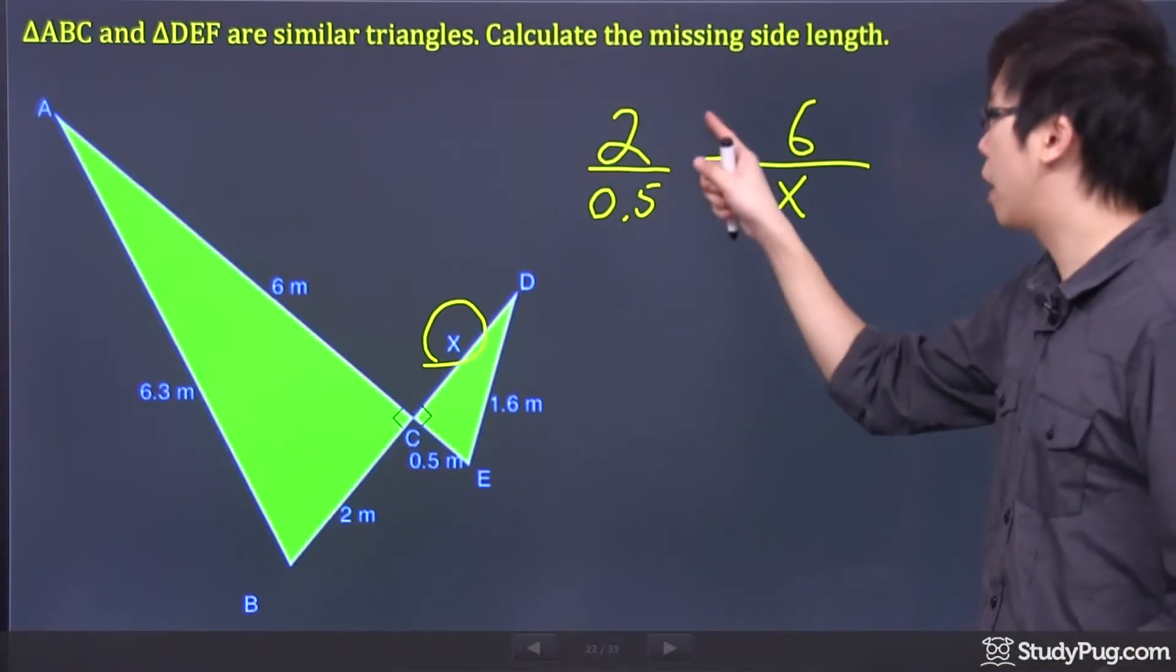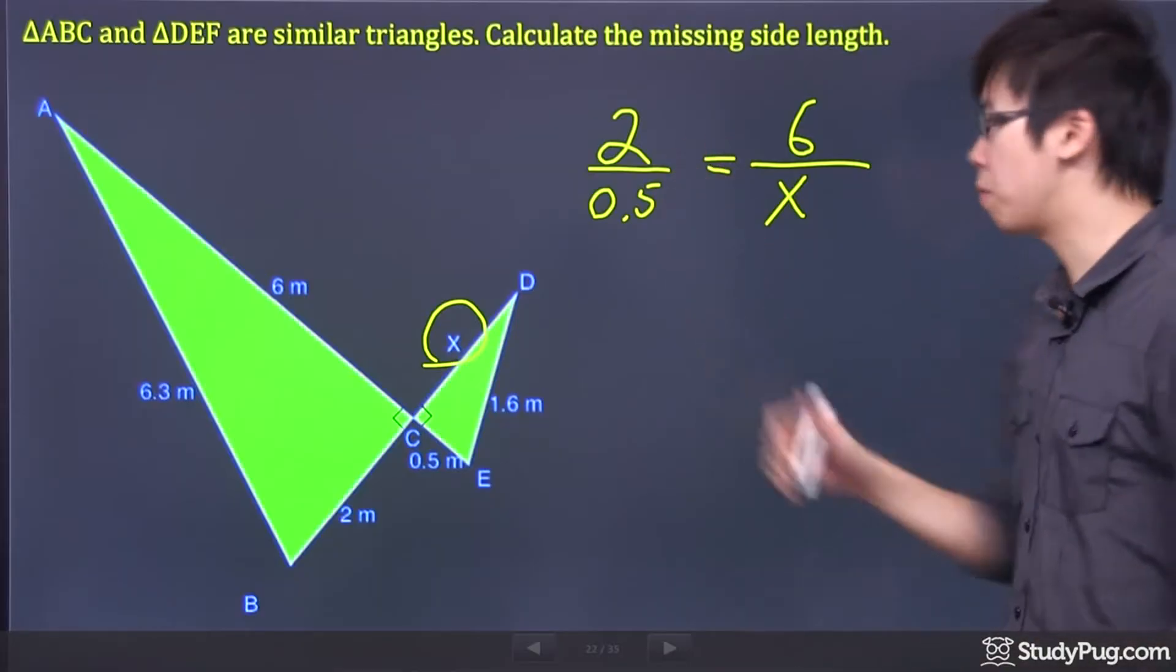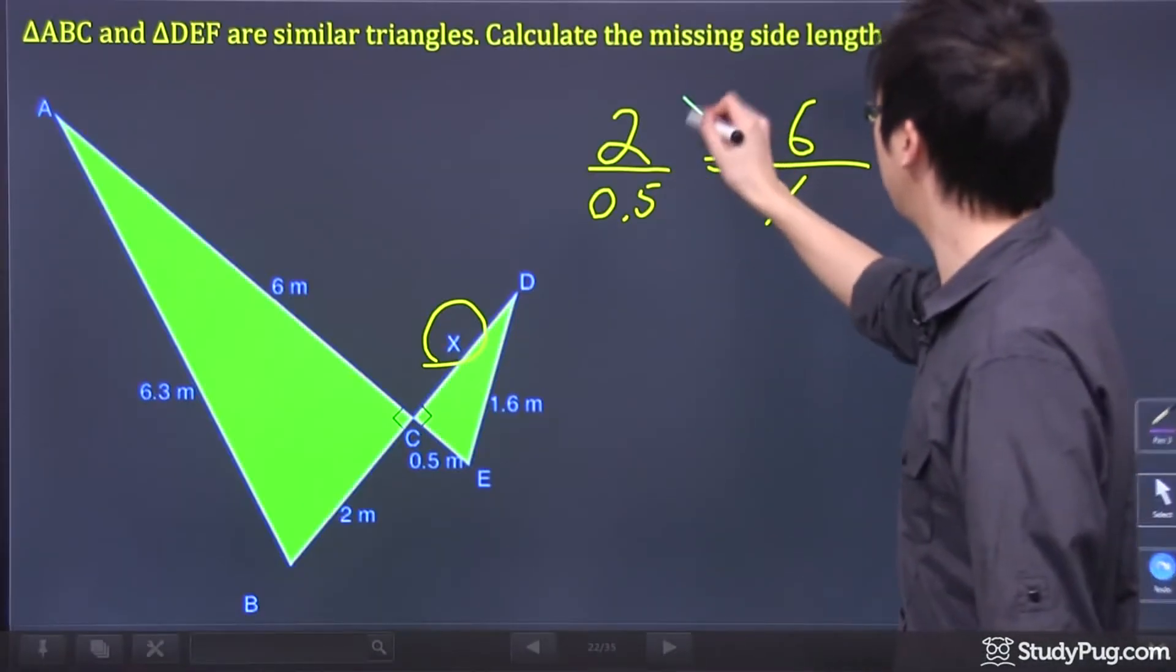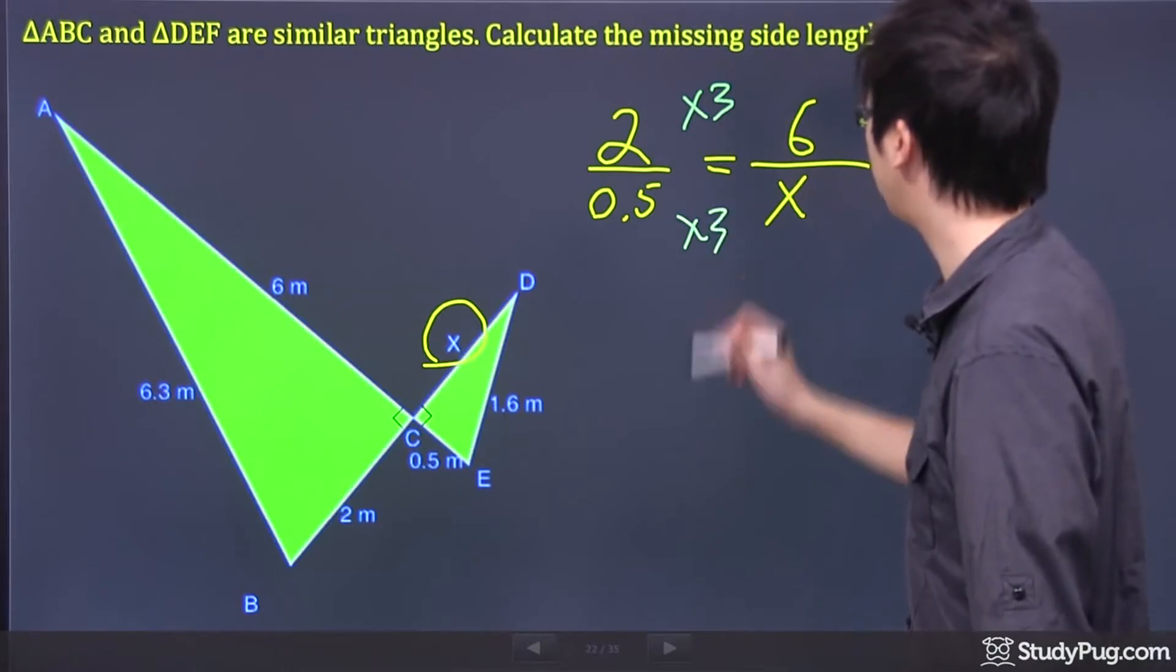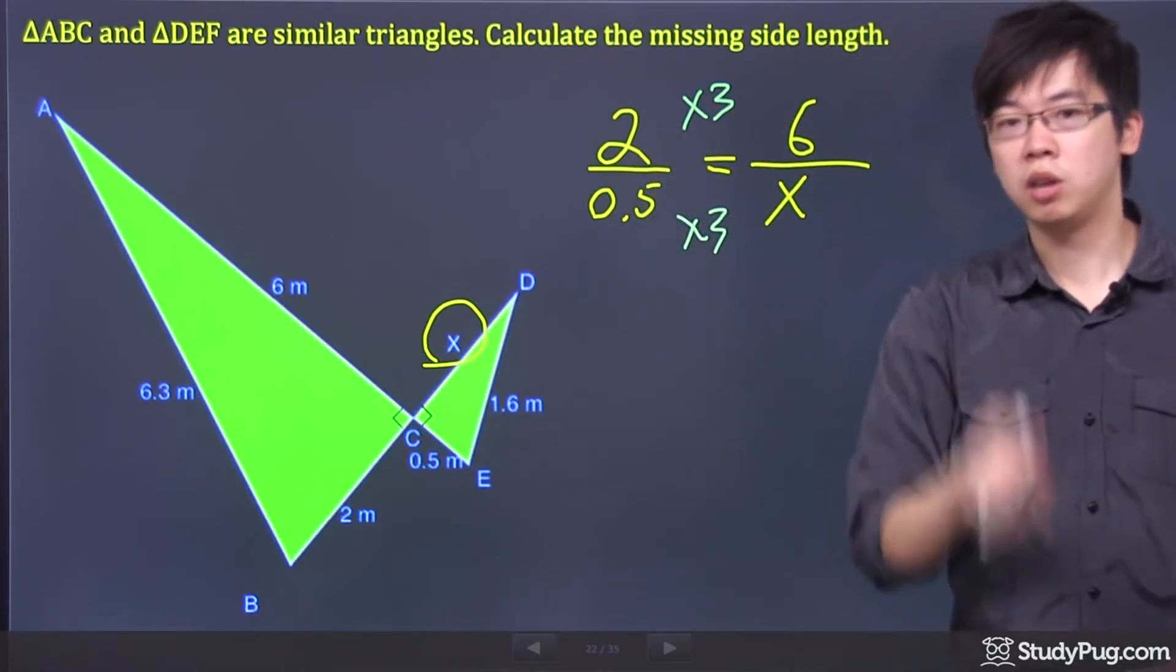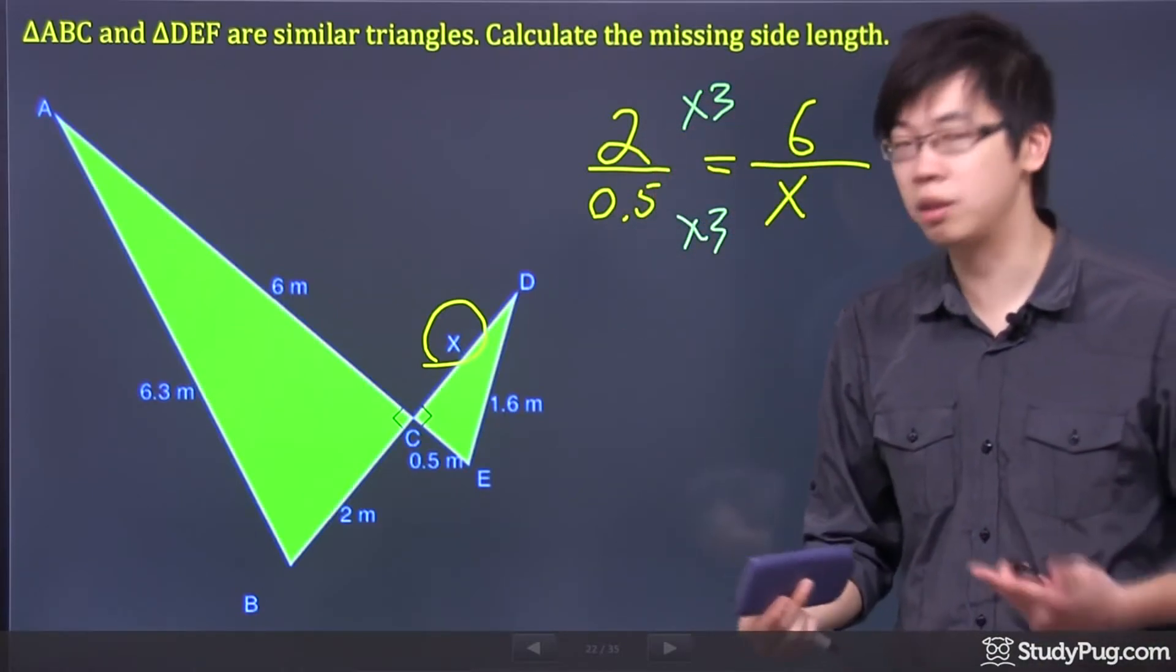All you need to do is think about how to go from 2 to 6. Well, mathematically, going from 2 to 6, you just have to times it by 3. And since you times by 3 to the top, you have to do the same thing to the bottom, right?